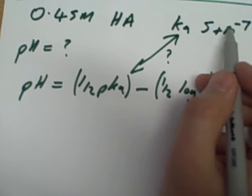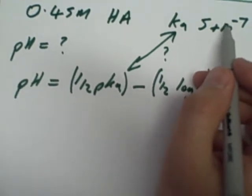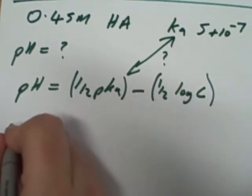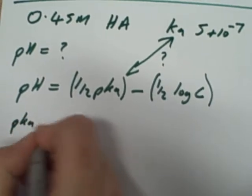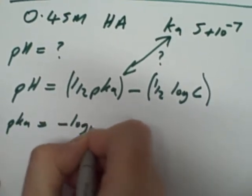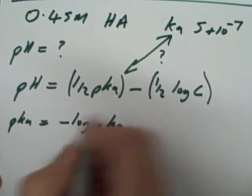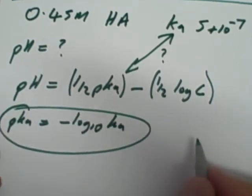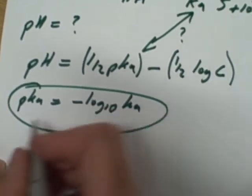So to make life easy, we log it. So if you remember that relationship: pKa equals minus log to the base 10 of your Ka. Okay, that's an important relationship. So let's calculate the pH.